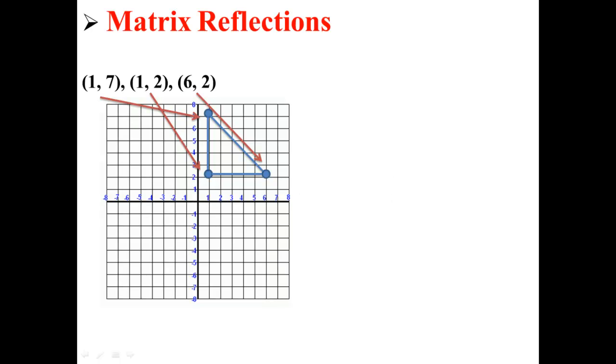Here we have a triangle graphed on a coordinate plane. This triangle is made up of the points (1, 7), (1, 2), and (6, 2).